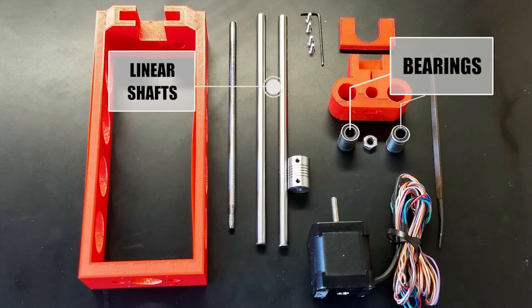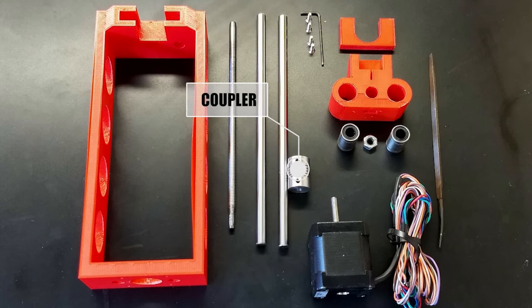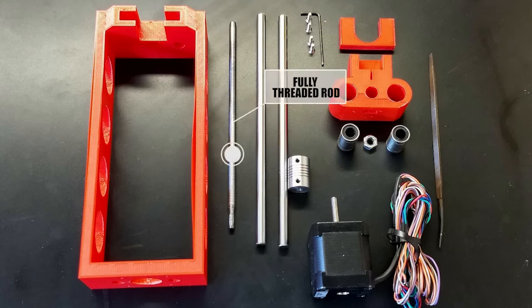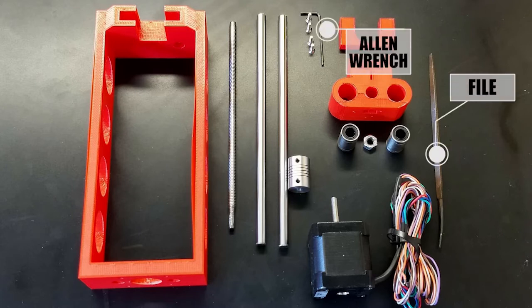Linear shafts and bearings, NEMA 17 stepper motor, flex coupler, quarter inch by 20 threaded rod cut to 200 millimeters in length, the corresponding nut, M3 flat head screws, and lastly a two millimeter allen wrench and a hardened steel file.